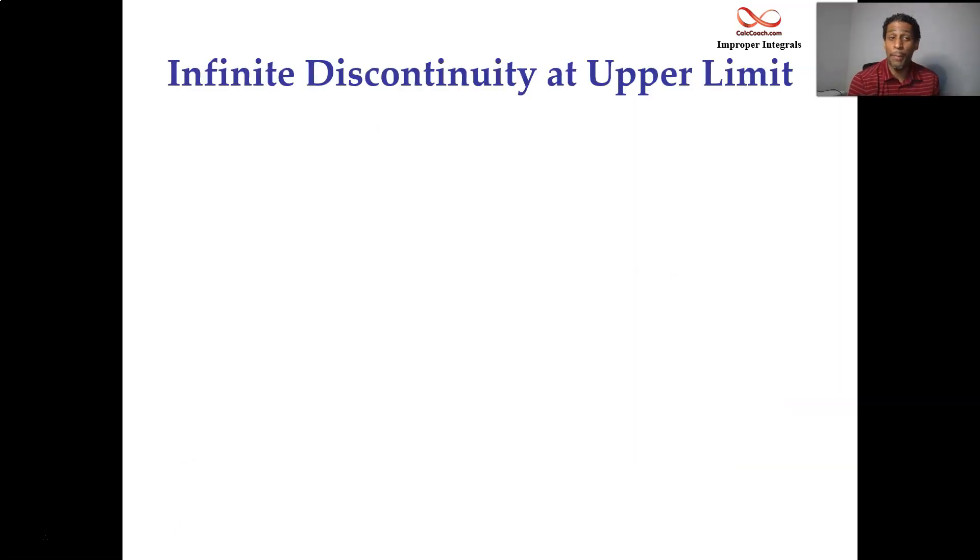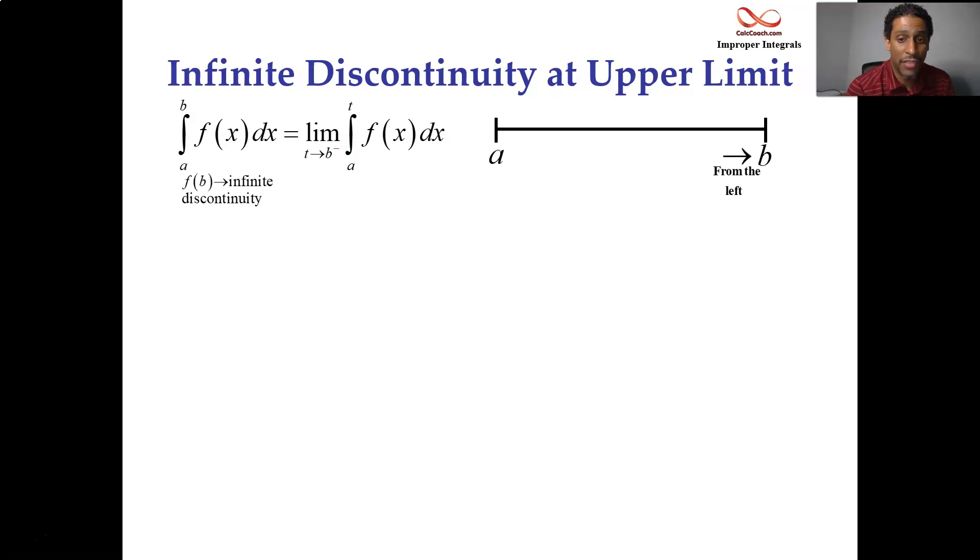We have this time the upper limit is the culprit. You integrate from a to b. The upper limit's causing the function to have division by zero. It's not really a place where your function is defined at. Your function is probably shooting up to positive infinity or down to minus infinity at that place. So you replace the upper limit with the variable and let t approach that, let that variable approach b, the original upper limit, but from the left-hand side. Take a look at the interval again, a to b. When you're approaching b, you're approaching from the left, smaller numbers.